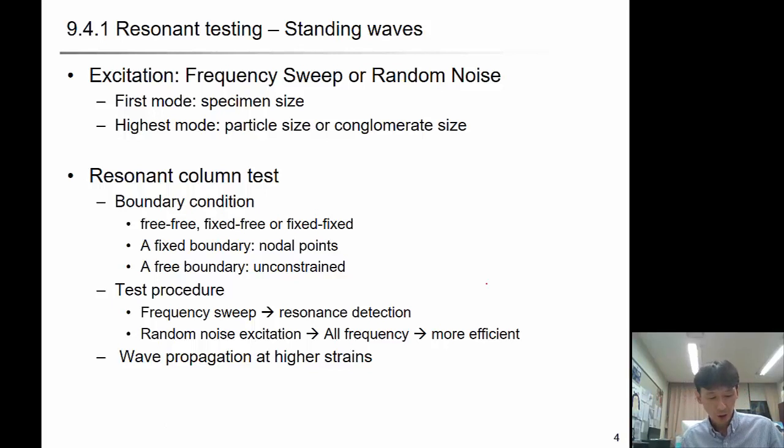For resonant testing, in frequency spectrum you want to find the resonant frequency which gives you the peak amplitude. So then the frequency sweep or the random noise are used, and mostly the first mode of deflection is generally used.